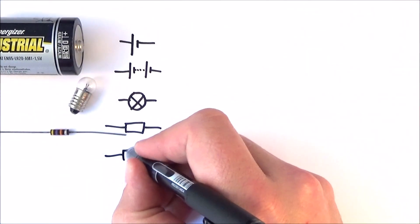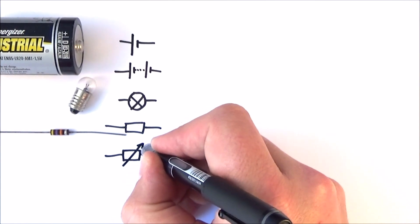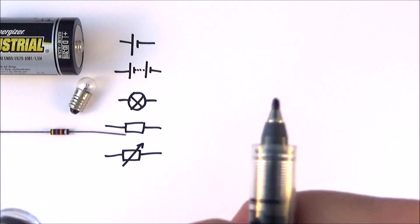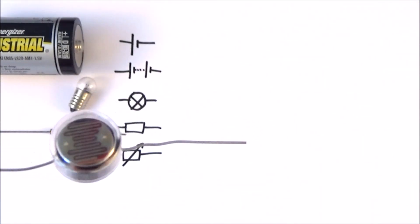But there are other kinds of resistors. We have some resistors that change their value. Because they change the value, we put an arrow to show that it can increase or decrease.